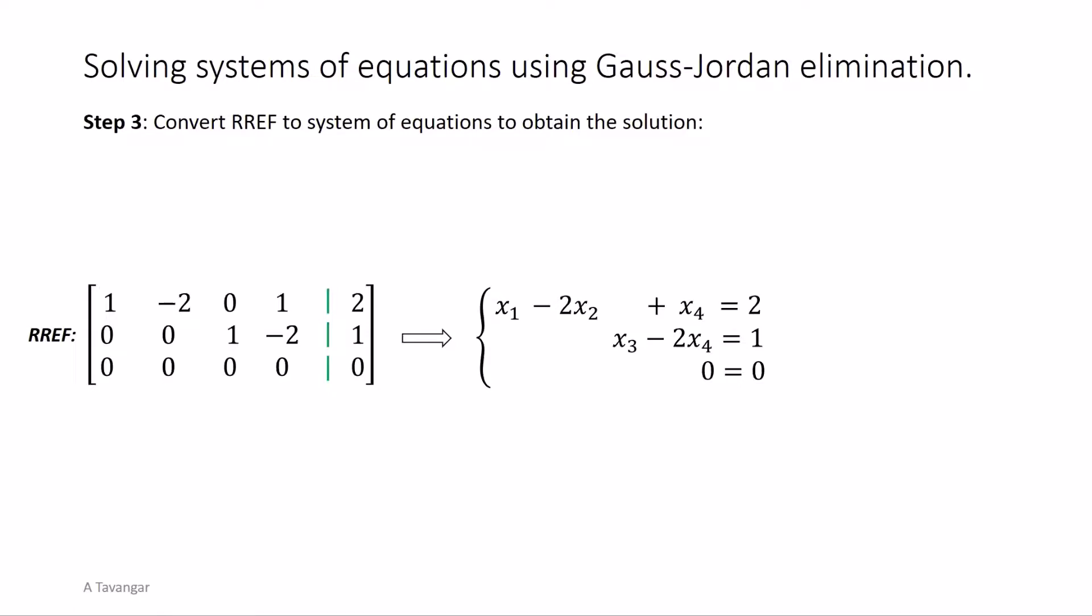Let us go back to the reduced row echelon matrix. The variables corresponding to the columns that have leading ones are called leading variables, in this case x1 and x3. On the other hand variables x2 and x4 that their corresponding columns do not have a leading one are called non-leading variables or free variables. They are called free variables as they are not restrained by any equation and can get any number. It is customary to label the free variables by new variables, for example s and t, which are referred to as parameters. Now letting x2 and x4 be represented by s and t respectively, we will use the equations in the system to solve for the leading variables in terms of s and t.